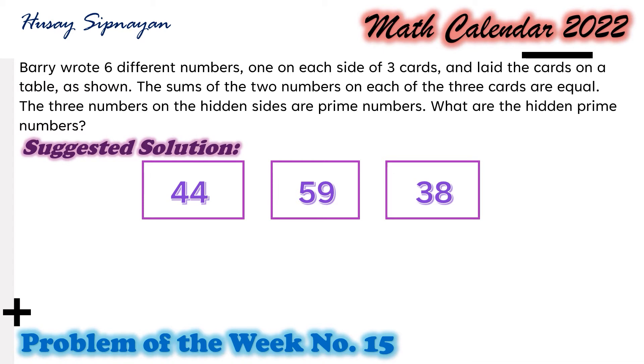Here is our suggested solution. Notice that 44 and 38 are both even numbers, while 59 is odd. If any odd prime number is added to 59, an even number will be obtained.